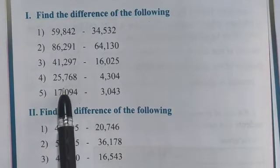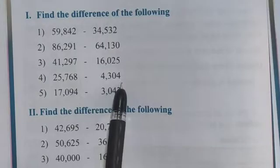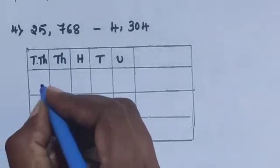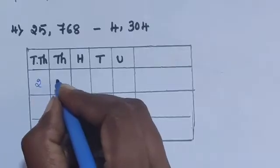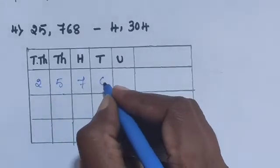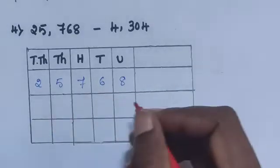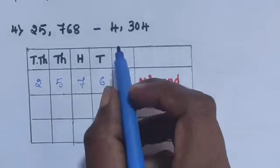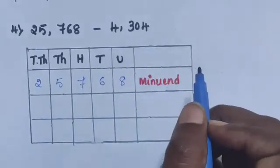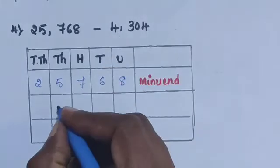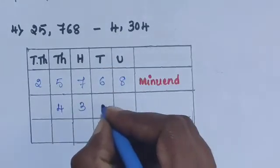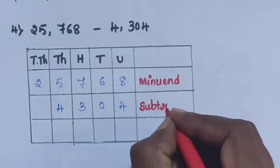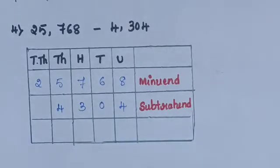Next, question number 4: 25,768 minus 4,304. 25,768 is the minuend. 4,304 is the subtrahend — 4 is in the thousands place, so write it in the thousands column.